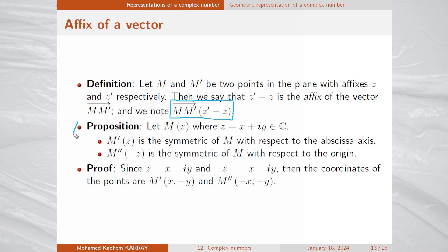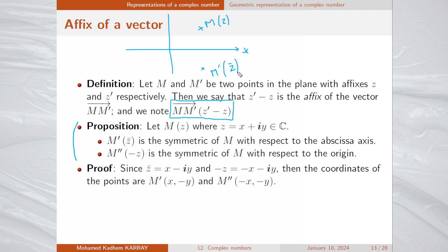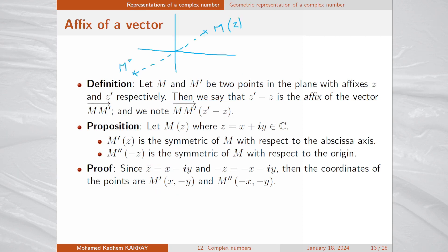Here is a useful property. Let M be a point with affix z and consider its symmetric M prime with respect to the abscissa. This point M prime has affix equal to the complex conjugate of z, since the conjugate is x minus iy and this point has coordinates (x, -y). Similarly, the symmetric of M with respect to the origin O has coordinates (-x, -y), so its affix is -z.